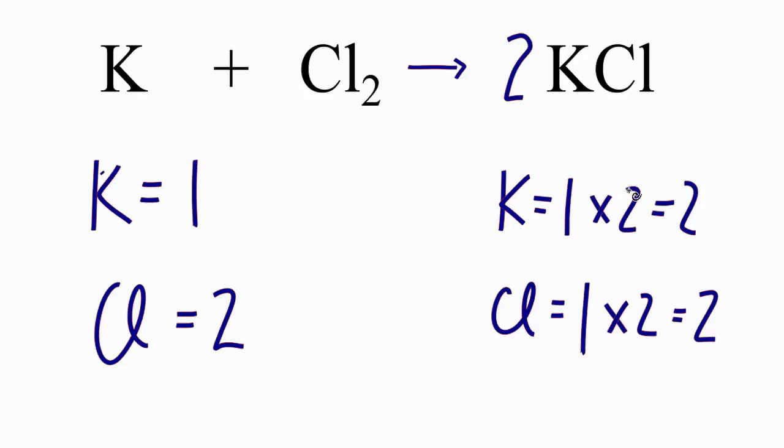Now we have two potassiums here and one here. To solve that, if we put a two right here, the one times that two, that'll give us two, and we'll have balanced the potassiums.